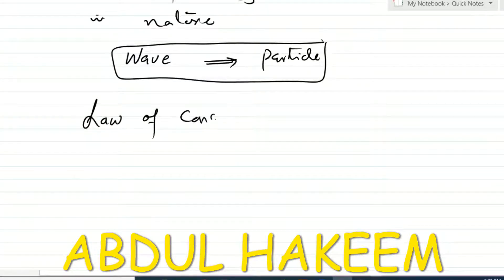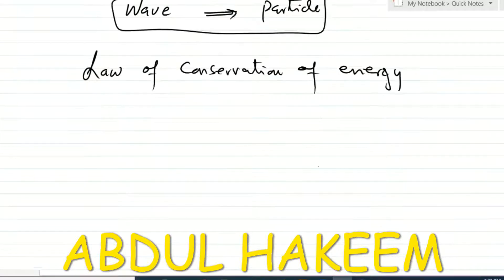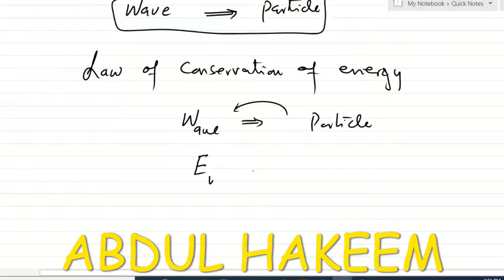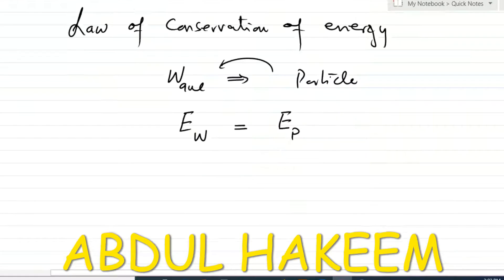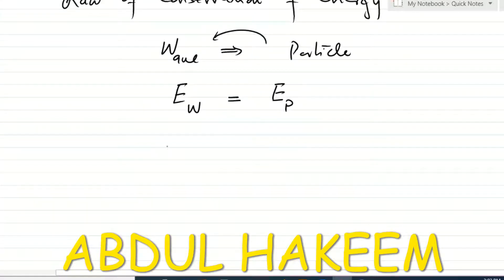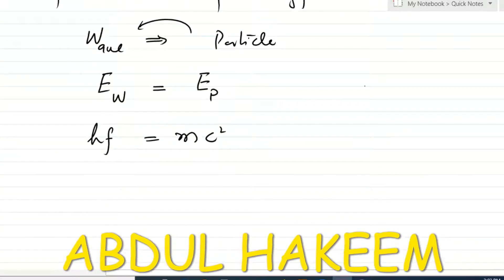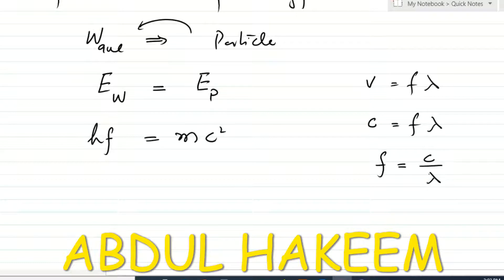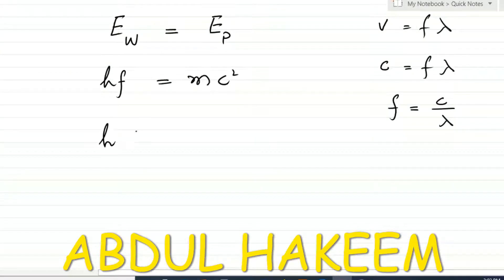According to the law of conservation of energy, the energy in wave nature equals the energy in particle nature. Energy in wave nature is E = hf, and in particle nature it's mc². From wave theory, v = fλ, so for light c = fλ, meaning frequency f = c/λ. Substituting, we get hc/λ = mc².